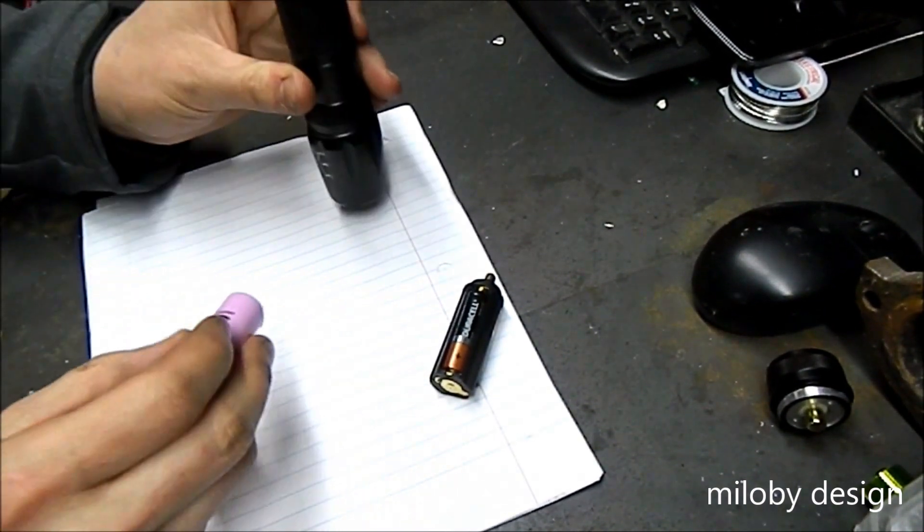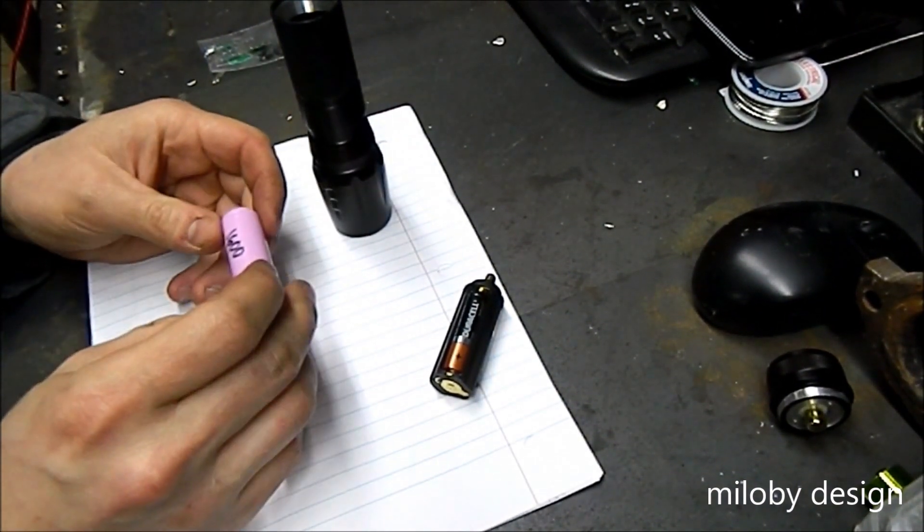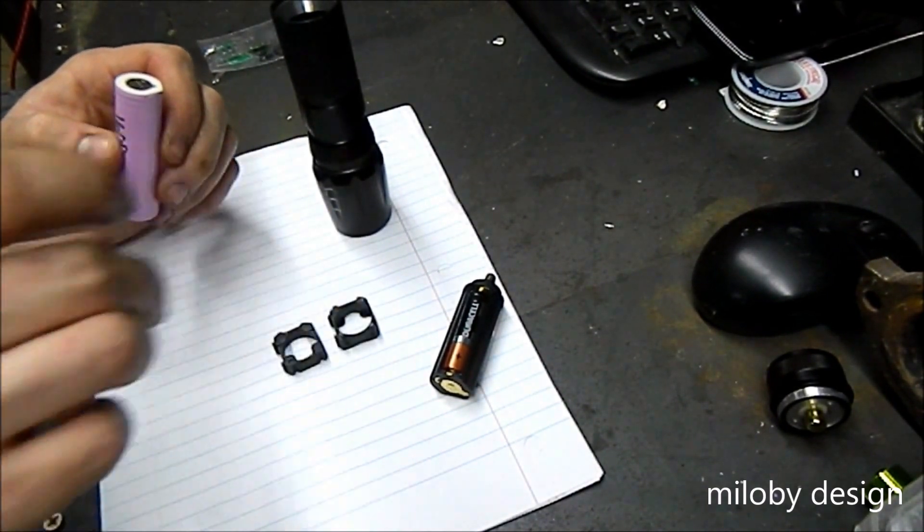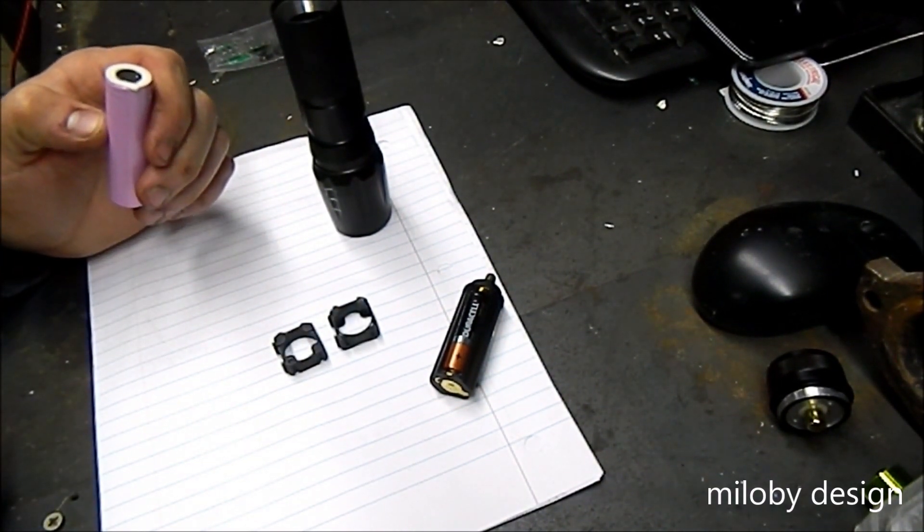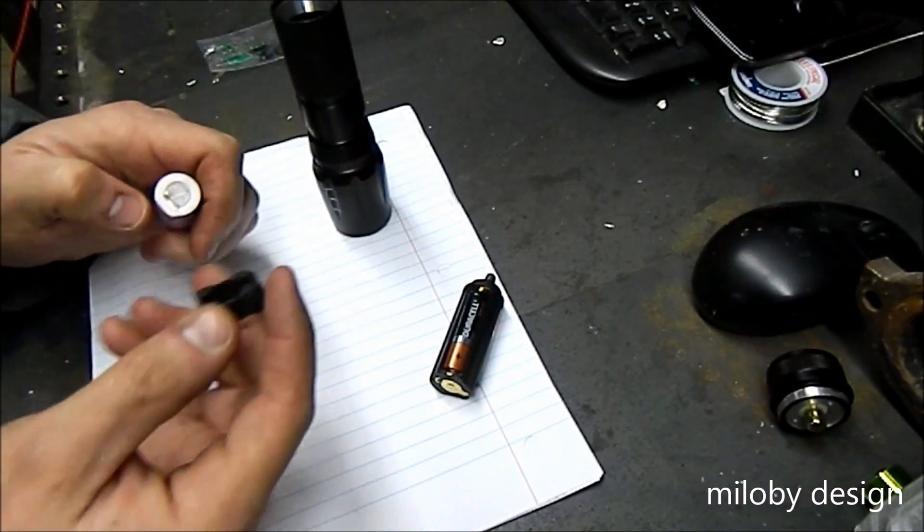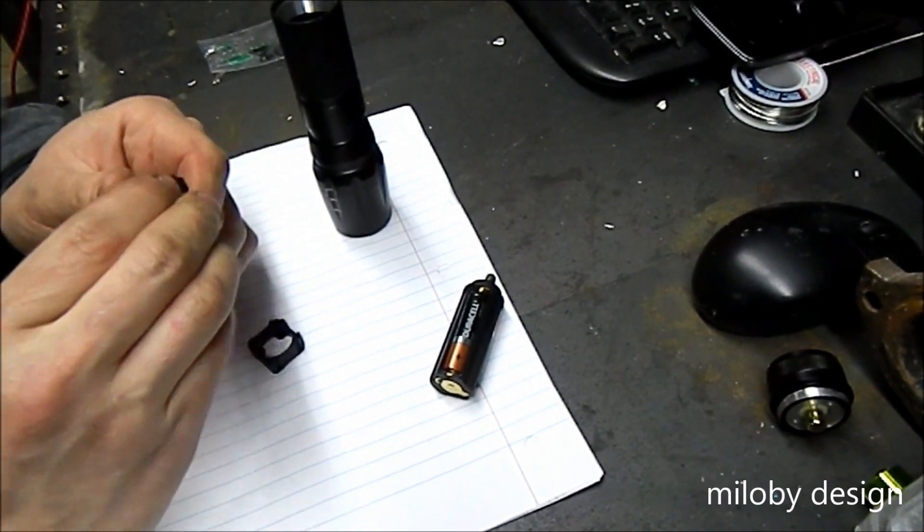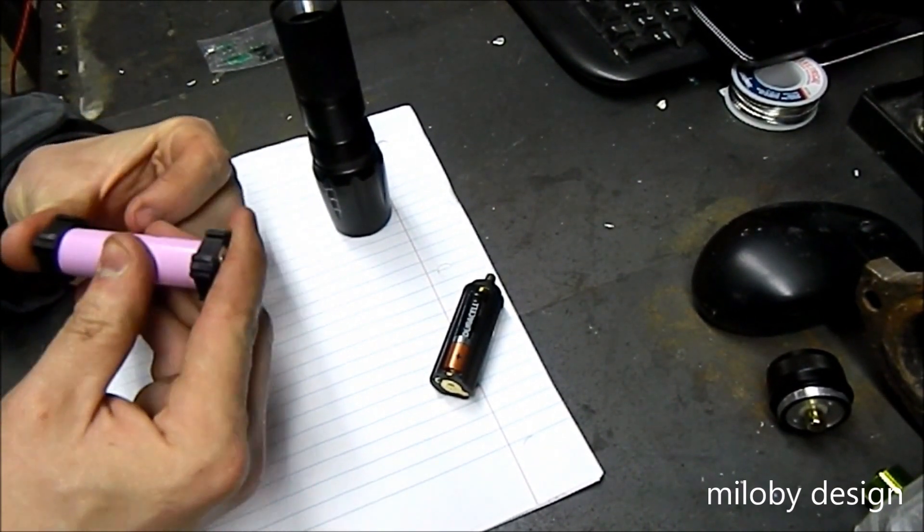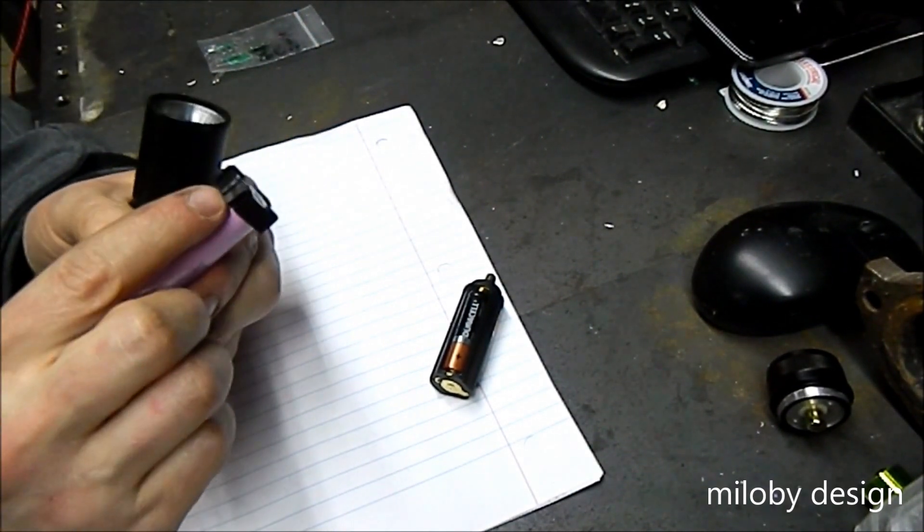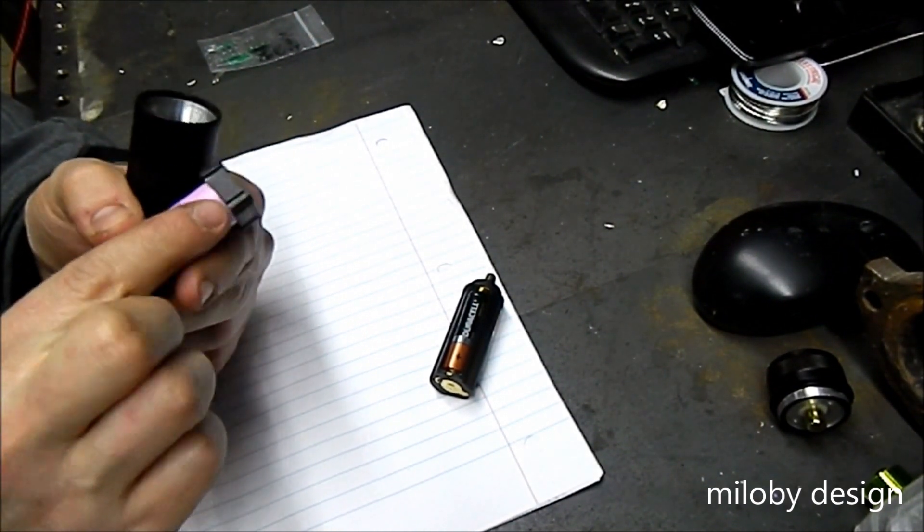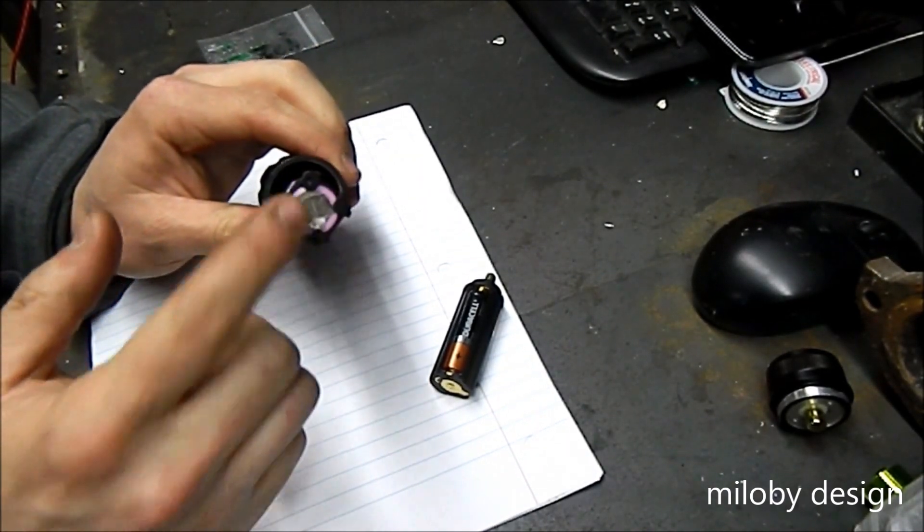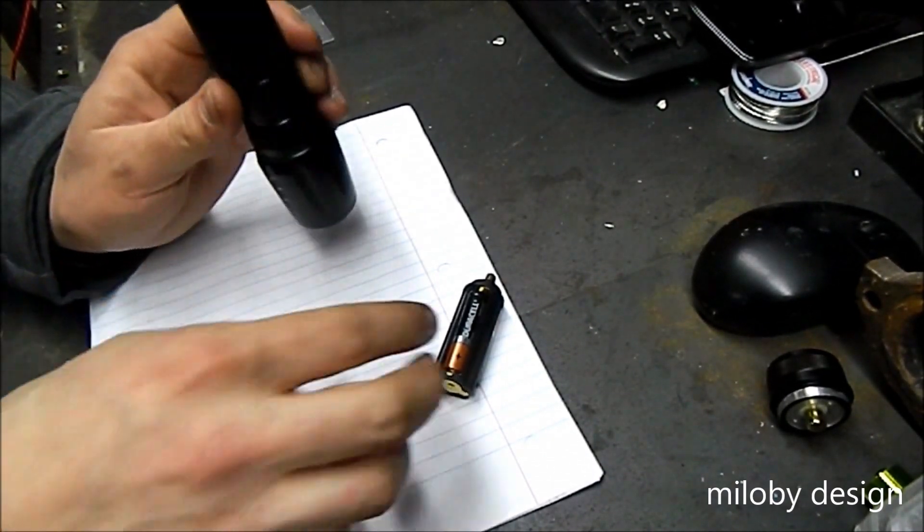I found that the 18650 cell spacers we use in our power wall or battery projects fit quite well inside the flashlight. You just have to round the corners a little bit, smooth them down, take the points off, and they actually slide in there quite well. I was pretty happy about that.